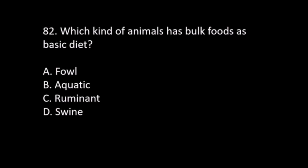Number 82. Which kind of animal has bulk foods as its basic diet? A. Fowl. B. Aquatic. C. Ruminant. D. Swine. The answer is C. Ruminant.